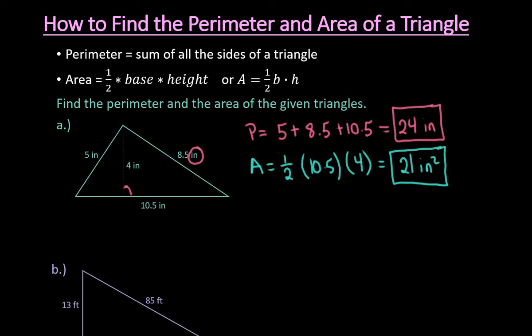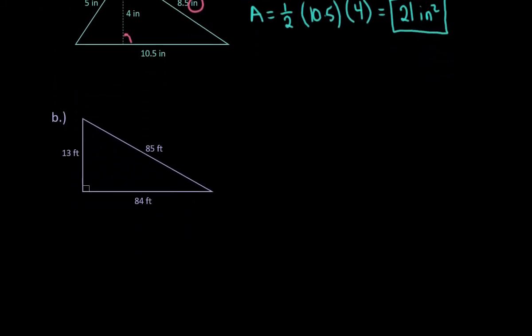All right, so moving into the next one that we have. On this one, we do have a right triangle that is given to us. To find the perimeter, we would still do the same thing. We would just take the 13, plus the 85, plus the 84.